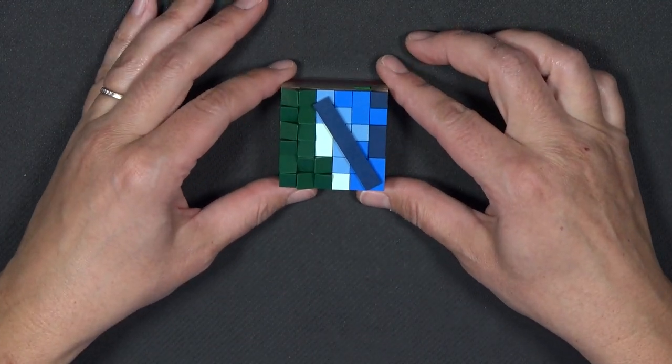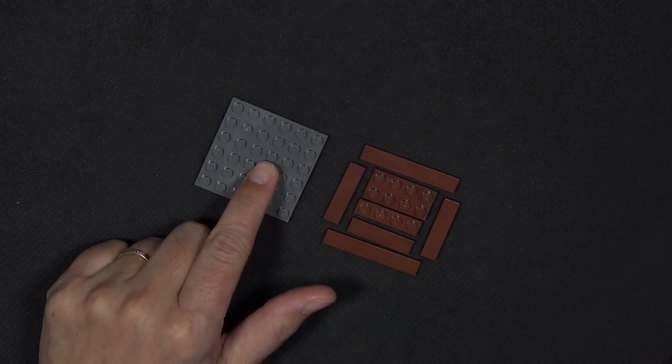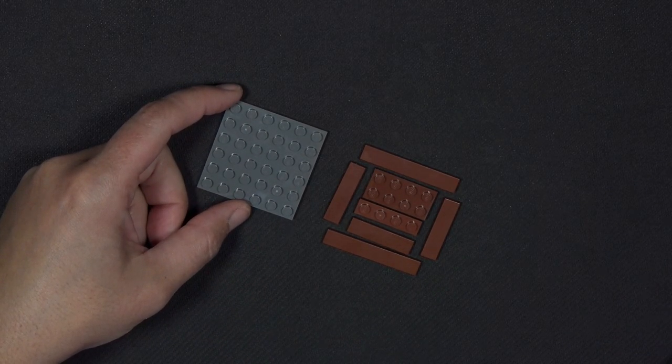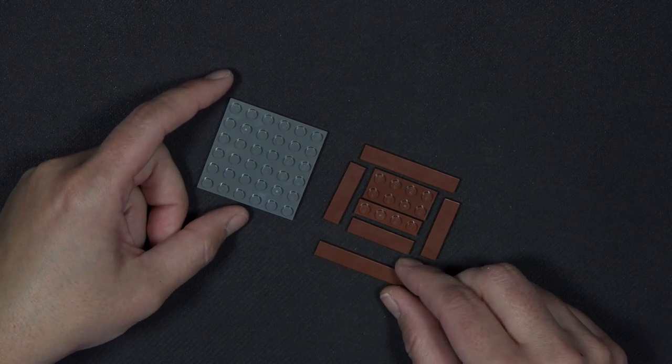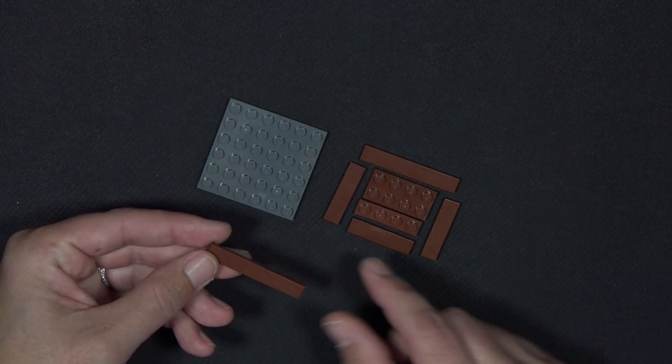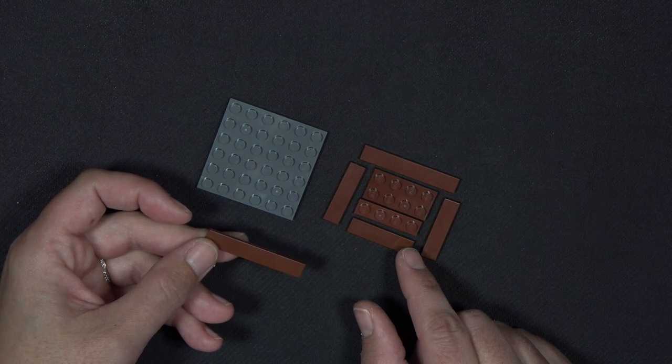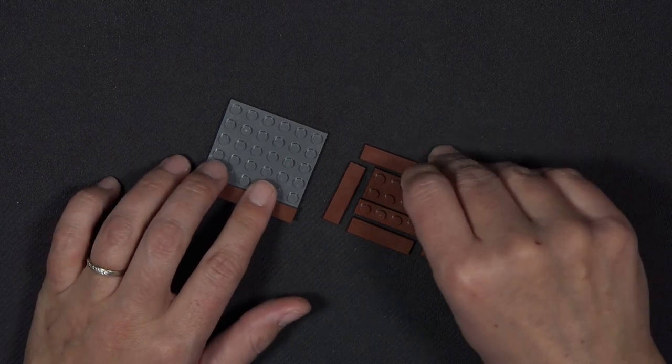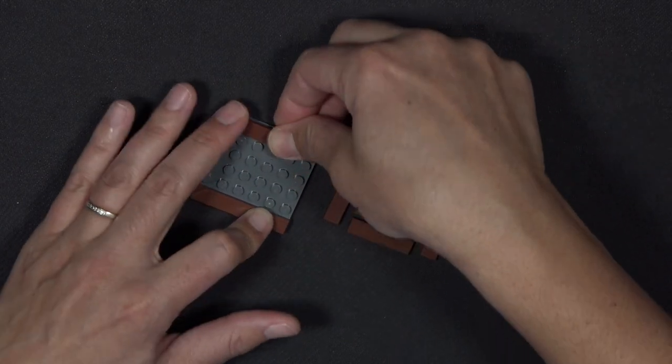Let's get started on the full tutorial. The first step to build Tectonic is to start with a 6x6 plate, and this is in the dark bluish gray. I have a 1x6 tile, and this color here is reddish brown. So a 1x6 tile there, and one on the opposite end.